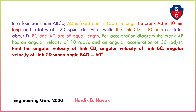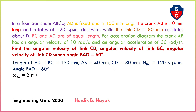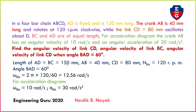Our goal is to find the angular velocity of link CD, the angular velocity of link BC, and the angular acceleration of link CD, when the angle BAD equals 60 degrees. The given values are: length of AD equal to BC equal to 150 mm, AB equal to 40 mm, CD equal to 80 mm, RPM is 120, and angle BAD is 60 degrees.